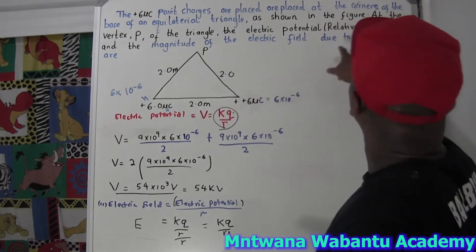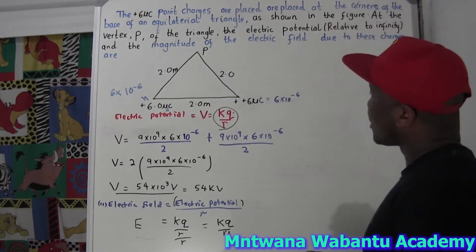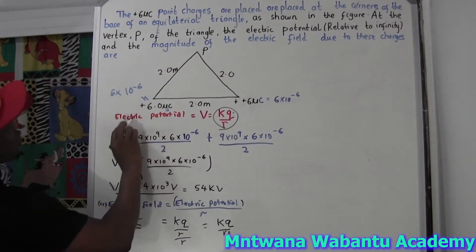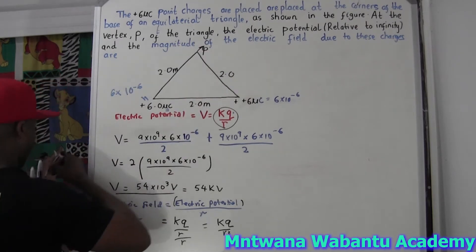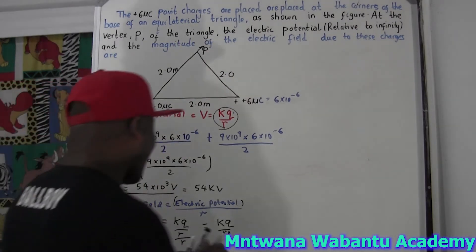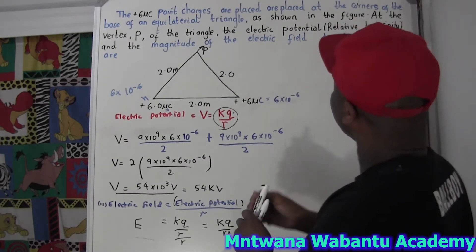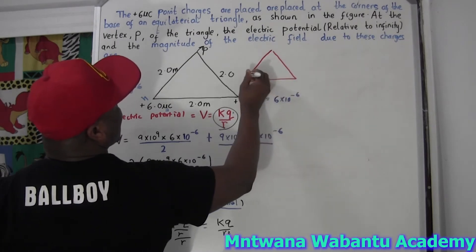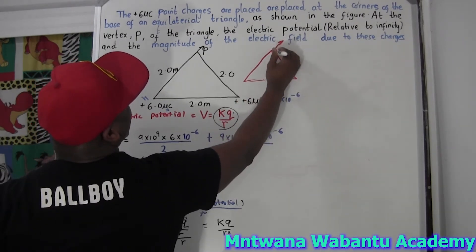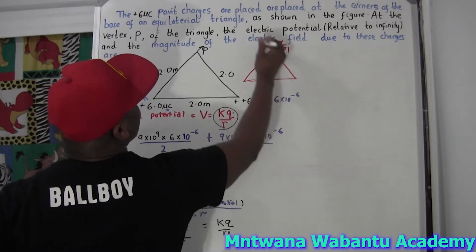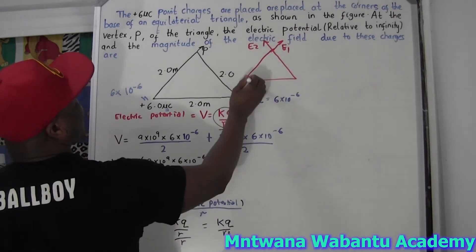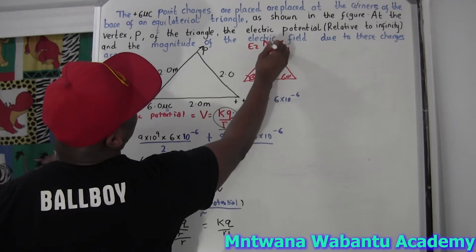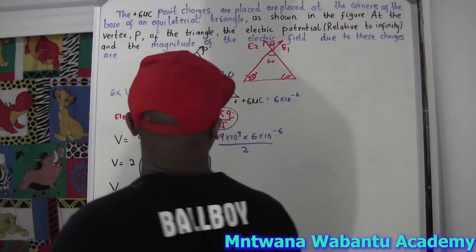Let me draw a quick sketch of the situation. So this is our triangle. The electric field from charge one points away — that's E₁ — and the field from the other charge points away too — that's E₂. Since it's an equilateral triangle, each angle is 60°.